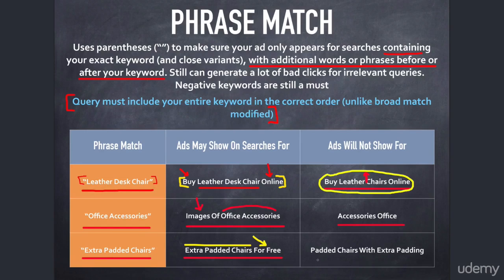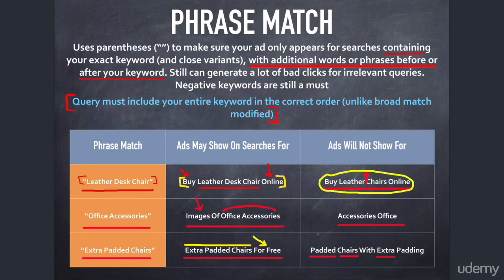Our ads will not show for "padded chairs with extra padding," even though that sounds similar. I have all the individual words — "padded," "chairs," "extra" — but they're not in the correct order. My phrase is "extra padded chairs" and this query rearranges the order, so it's not eligible. This is another situation of phrase match potentially knocking out what would have been a good keyword.